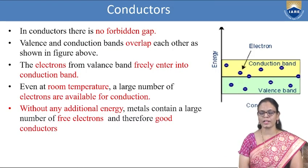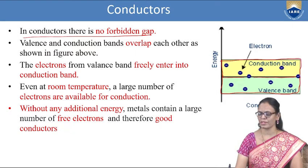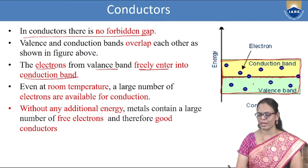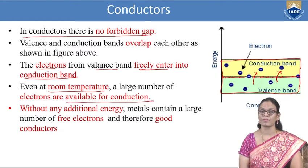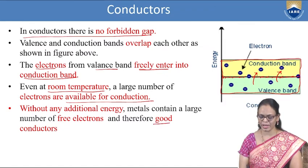In conductors, there is no forbidden gap — the valence band and conduction band overlap. Since there is no gap, electrons from the valence band can freely enter the conduction band. Even at room temperature around 30°C, a large number of electrons are available for conduction without any additional energy. Metals therefore contain a large number of free electrons and behave as good conductors.